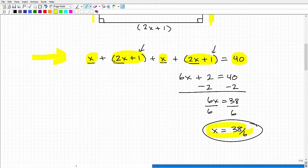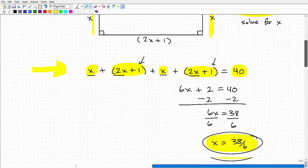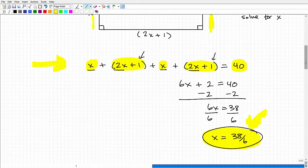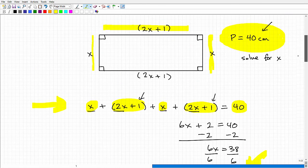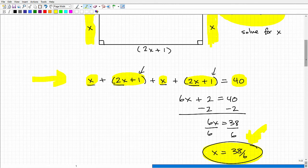A couple things you can do here. It depends on how you see your answer choices or how you have to enter your answer. With fractions like this, you want to reduce them or turn them into a mixed number or decimal. Knowing this value would be the width. If I wanted to find this side, I'd take two times this value and add one to it. Be very careful.